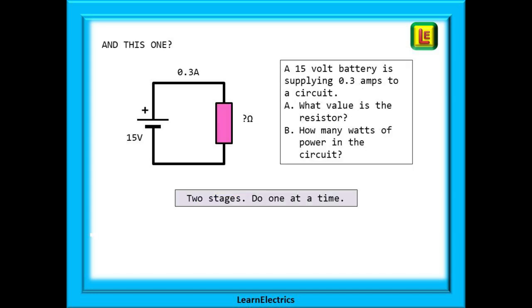Now try this one. A 15 volt battery is supplying 0.3 amps to a circuit. There are two calculations to do. First of all, what value is the resistor, and secondly, how many watts of power are in the circuit. We can work this out in two stages.